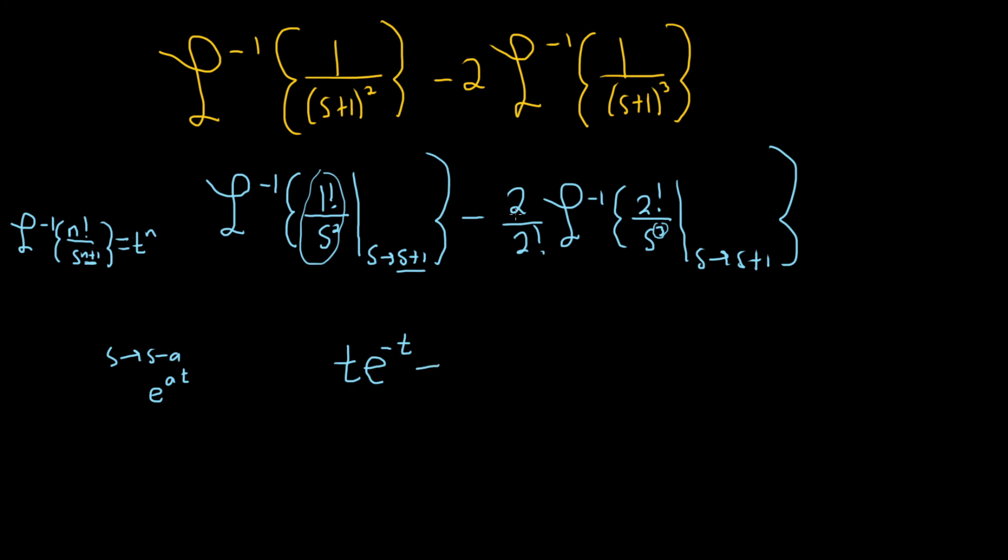Minus, this is 2 over 2, because 2 factorial is 2, so it goes away. This is going to give us a t squared. And again, the shift from s to s plus 1 will give us an e to the negative t. Remember, if you go from s to s minus a, it gives you e to the a t. It's really s to s minus negative 1. It's really a negative. And that would be the final answer.